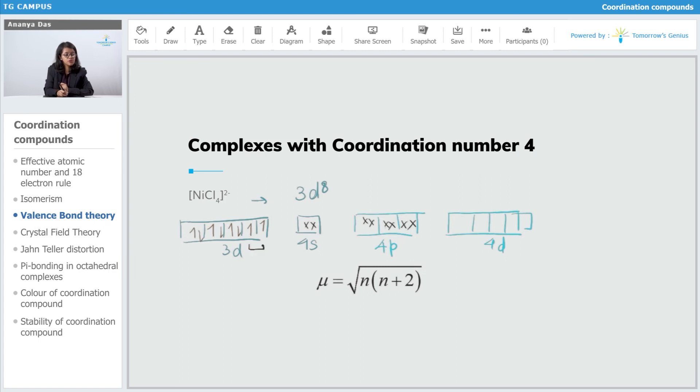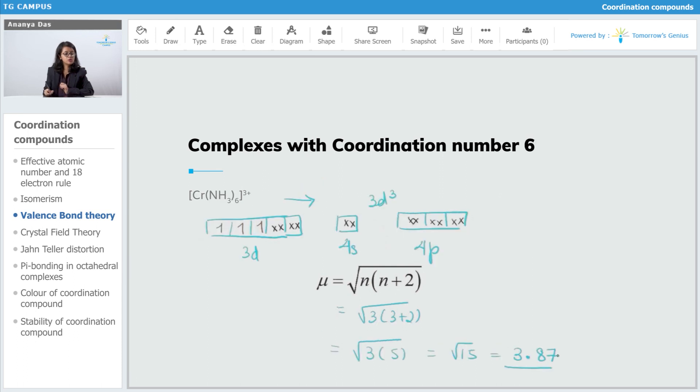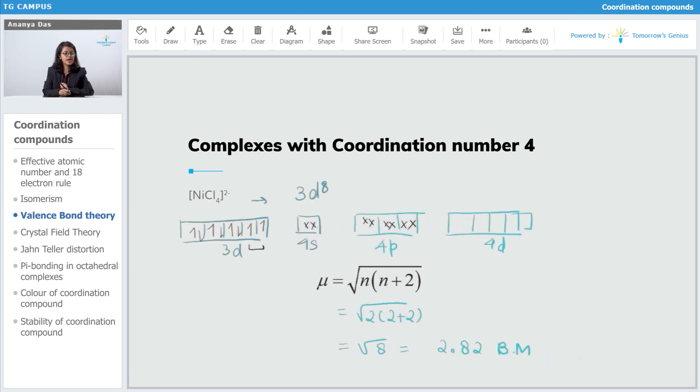There are two unpaired electrons, so our n will be 2. Substitute that here: 2 into 2 plus 2, that's under root 8, and under root 8 has the value of 2.82. In the previous one it was 3.87 Bohr magneton. This complex has a spin-only magnetic moment of 2.82 Bohr magneton.